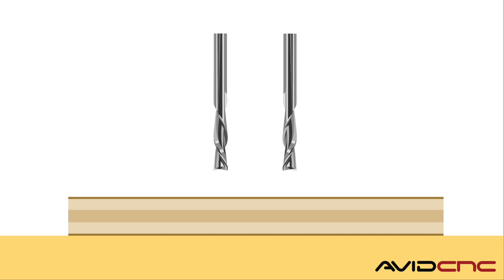If the flutes curve downward, then it's a down cut bit. If the flutes curve upward as they move from left to right, then you have an up cut bit.